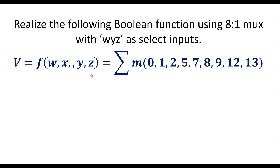We are supposed to implement this function with the help of an 8-to-1 MUX. We know that in an 8-to-1 MUX we need 3 select lines. Here it is said that we are supposed to use w, y, z as select lines. The function has 4 variables: w, x, y, z.